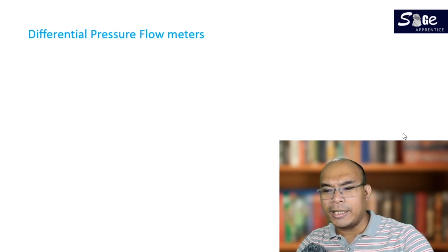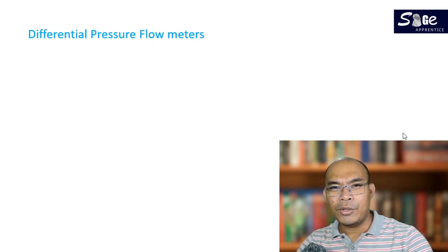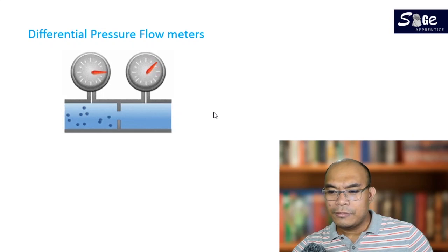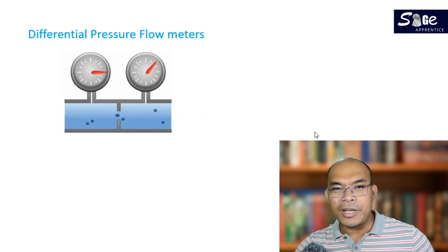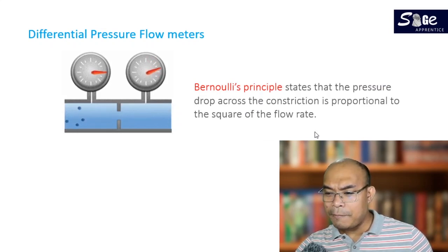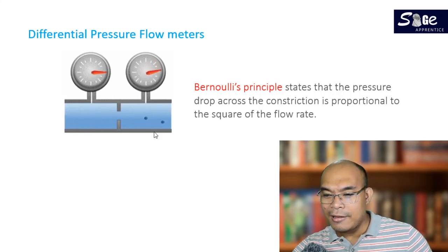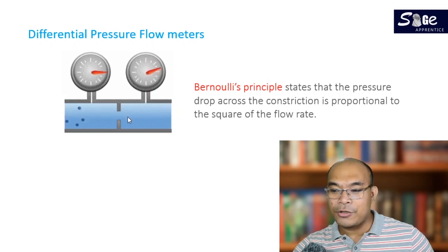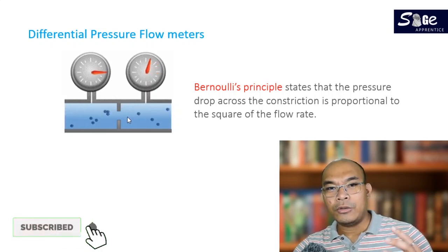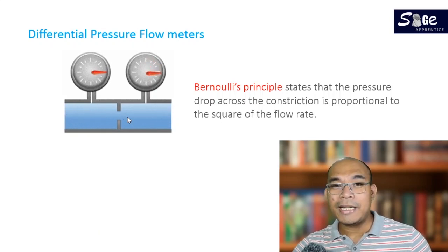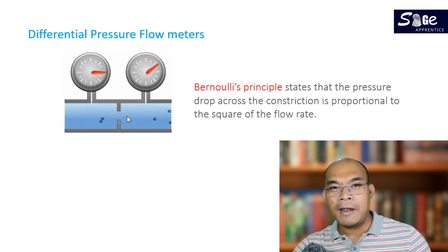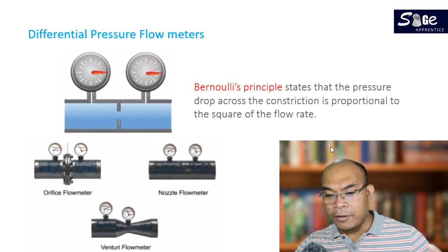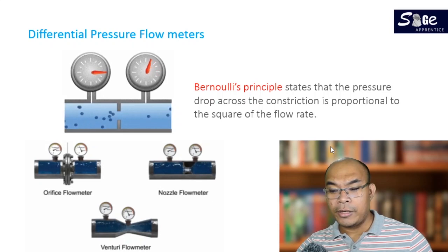The most commonly used flow meters are the differential pressure flow meters. The concept is that the difference in pressure will help us measure the flow in our particular system. This kind of flow measurement uses the principle of Bernoulli's, which states that the pressure drop across a constriction is proportional to the square of the flow rate. The most common differential pressure flow meters are the orifice, the nozzle, the venturi nozzle, and the venturi flow meters.